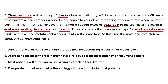Let's go through the answer choices. Allopurinol would be reasonable therapy by decreasing serum uric acid levels — but this is acute gout, and acute gout is not treated with allopurinol; that's for chronic management. Decreasing dietary protein may have a role in decreasing frequency of recurrent attacks — that's plausible. 'Most patients will only experience a single attack' is not true, as most have recurrences. 'Overproduction of uric acid is the etiology in most patients' is also not true — the most common etiology is under-secretion. By process of elimination, the answer is B.